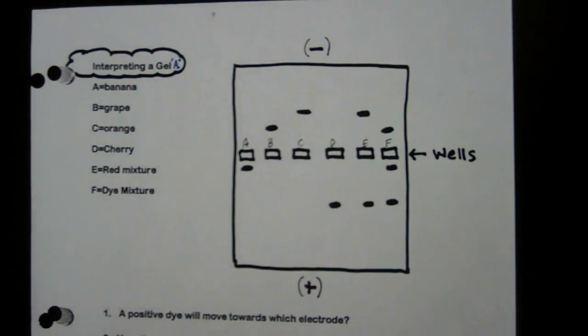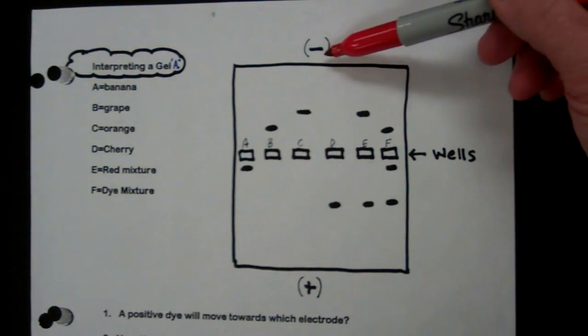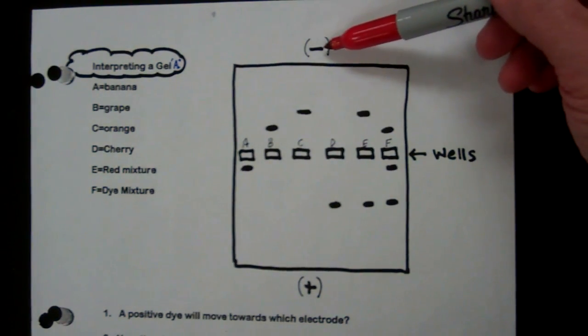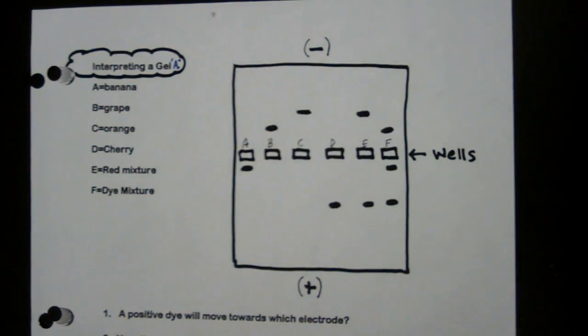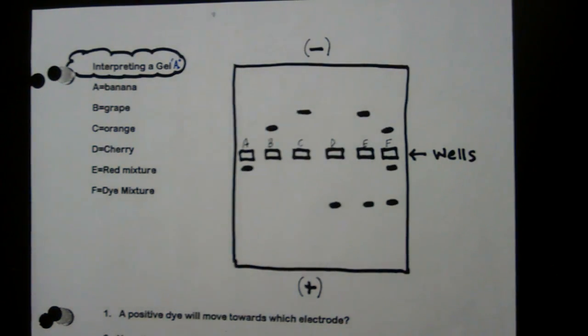Now what you've got to look at first is look at where the negative electrode was when you ran it and where the positive electrode is. Now remember, opposites attract.